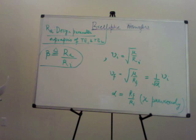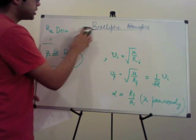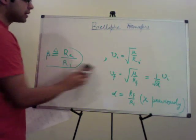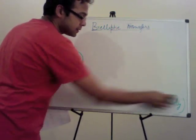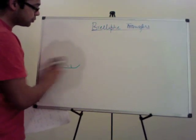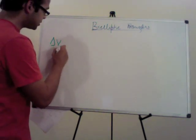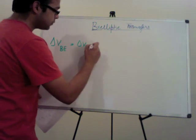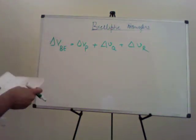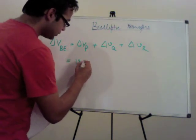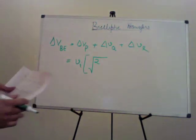All three delta Vs are tangential, just as in the Hohmann transfer. Delta V1 is from the initial orbit to transfer ellipse 1, delta V2 is from transfer ellipse 1 to transfer ellipse 2, and delta V3 is from transfer ellipse 2 to the final orbit. The total delta V for the bi-elliptic transfer depends on the initial velocity, as well as the ratios alpha and beta.